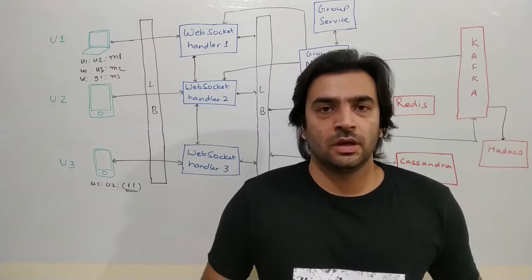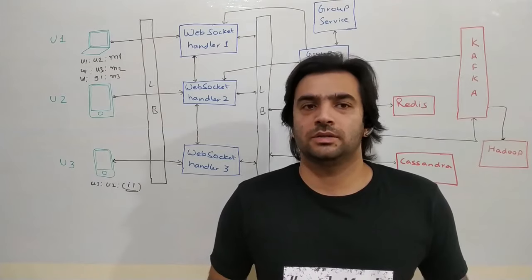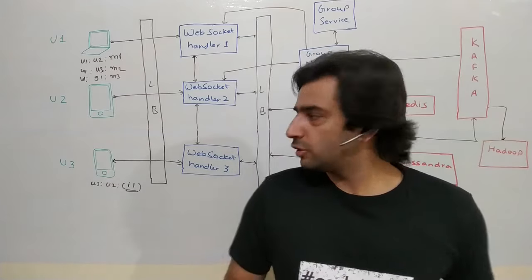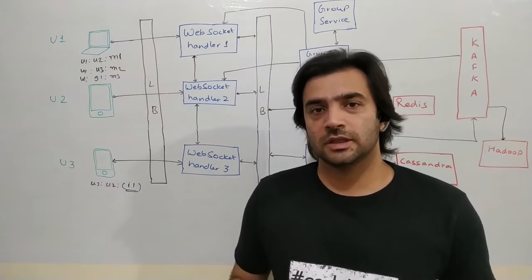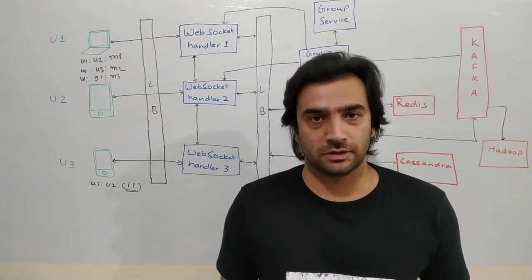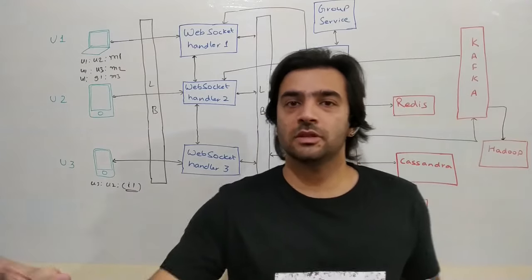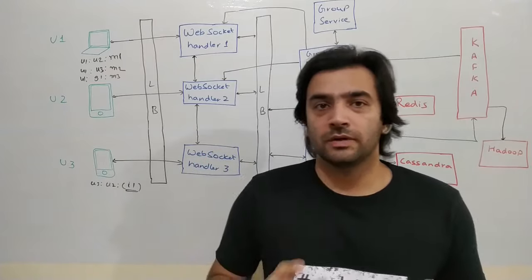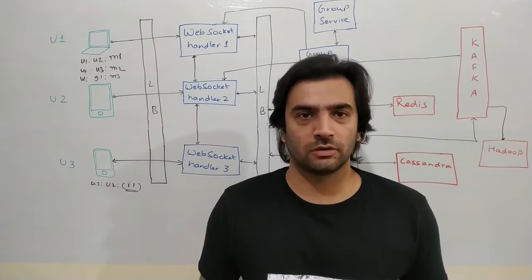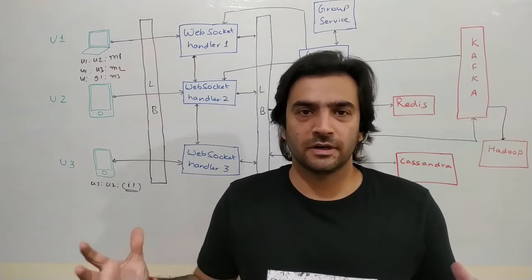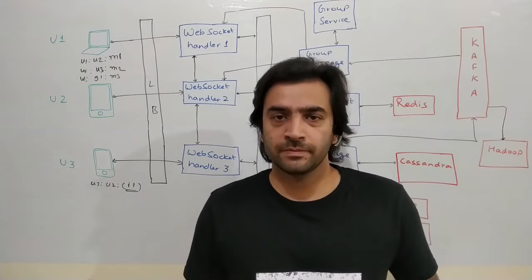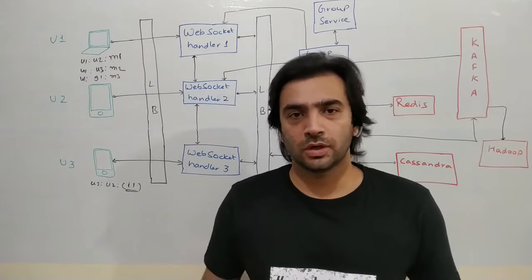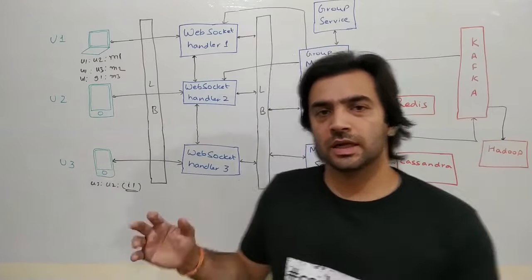One optimization: if many people are sharing the same image — say during a political or sports event — we don't need to upload it multiple times. Before uploading, the device computes a hash of the image and sends it to Asset Service asking: do you already have this image? To reduce hash collisions, we use five different hash algorithms. If all five hashes match an existing image, it's already stored and we just send the message. If not, the image is uploaded via the regular route.